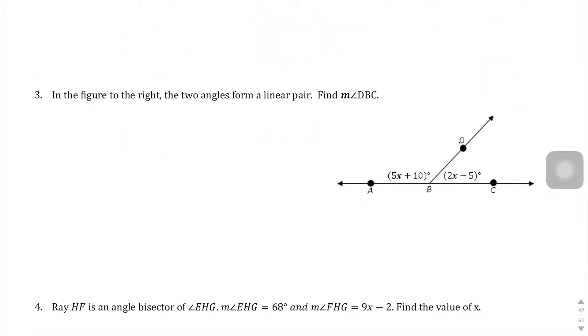Question number three. In the figure to the right, the two angles form a linear pair. So this plus this is going to equal 180 degrees. So 5x plus 10 plus 2x minus 5 equals 180 degrees. Find DBC. So we just want to know what this angle is right here. Let's solve for x, and then we'll plug it back in.